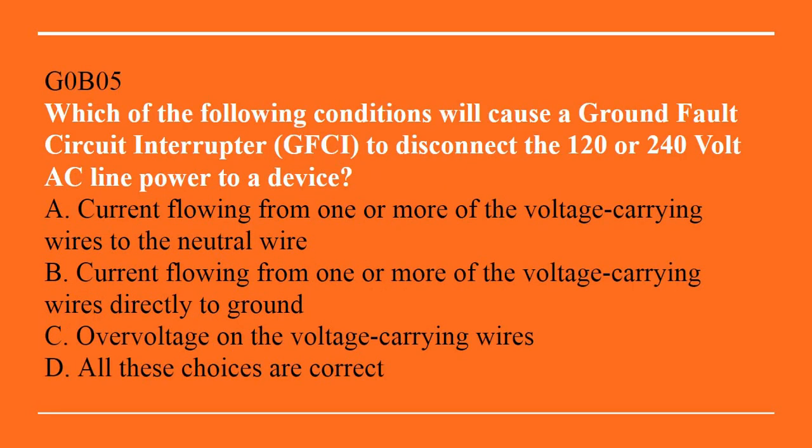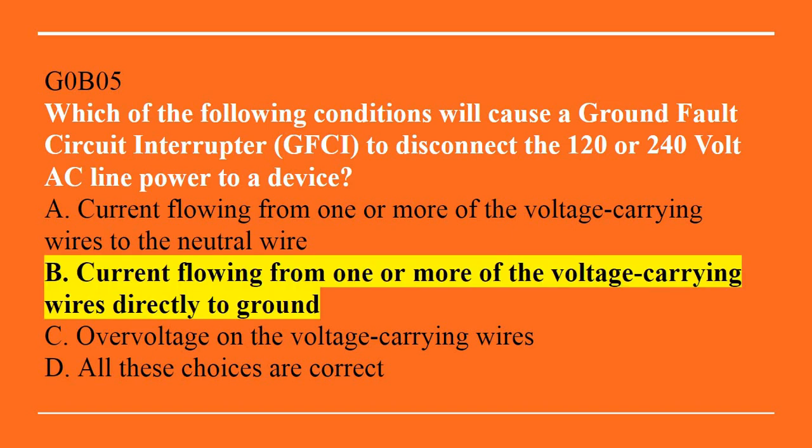G0B05: Which of the following conditions can cause a ground fault circuit interrupter to disconnect the 120 or 240 volt AC line power to a device? A, current flowing from one or more of the voltage-carrying wires to the neutral wire? B, current flowing from one or more of the voltage-carrying wires directly to ground? C, over voltage on the voltage-carrying wires? Or D, all of these choices are correct. Correct answer is B — current flowing from one or more of the voltage-carrying wires directly to ground.